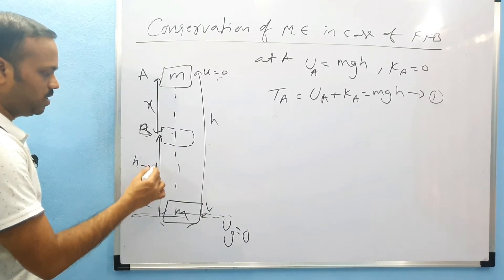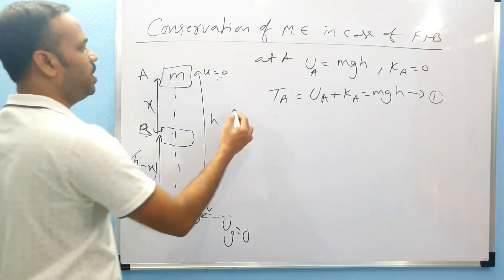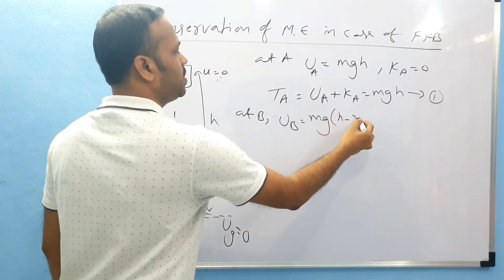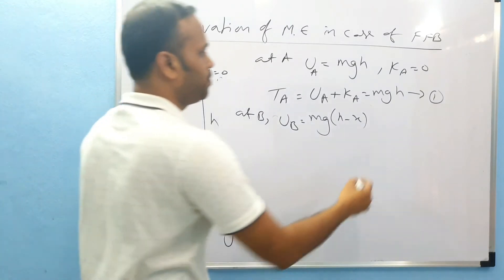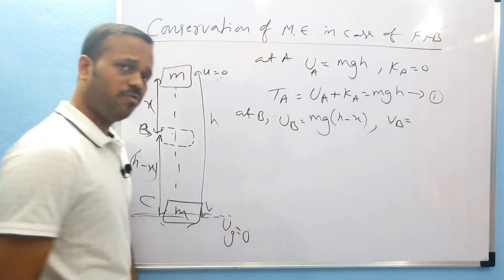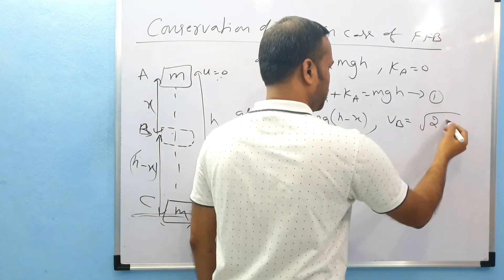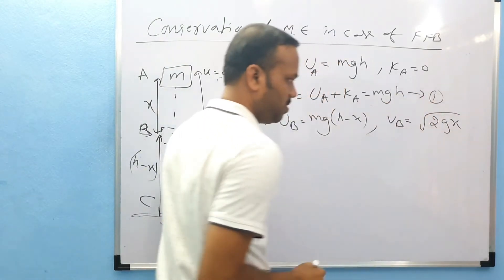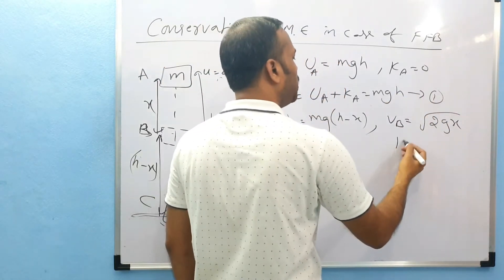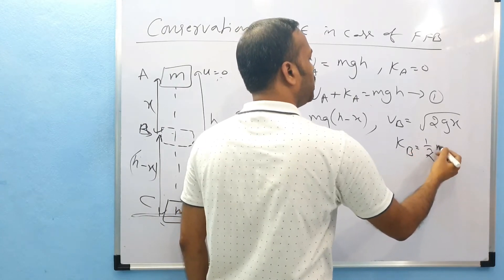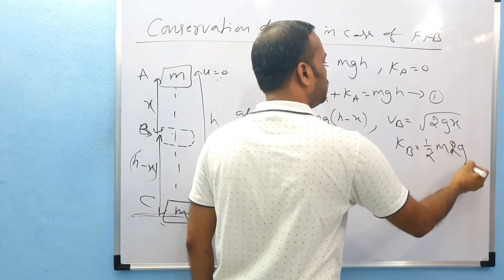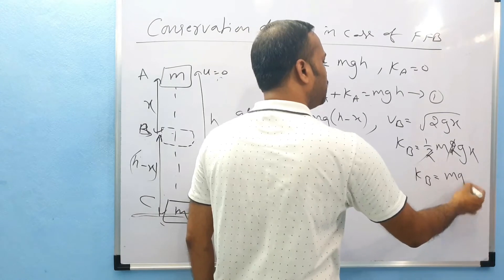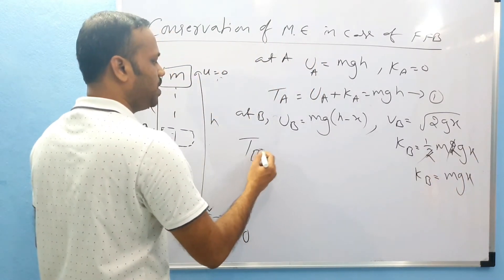At point B, the height is h minus x, where x is the distance fallen. So at B, what is the potential energy? mg into (h minus x). What is the velocity at B? Using the freely falling body formula, velocity equals root of 2gx, where x is the distance traveled. So what is KB?